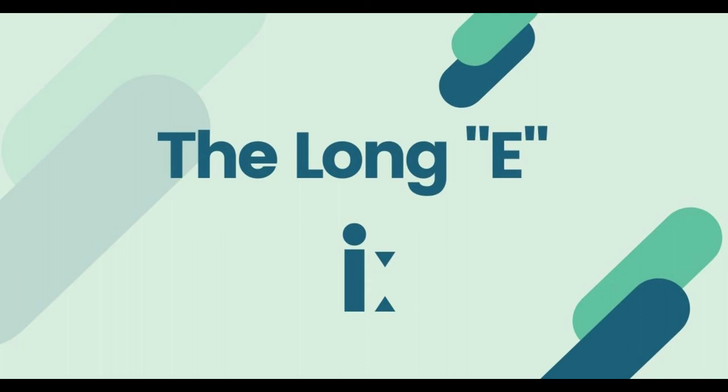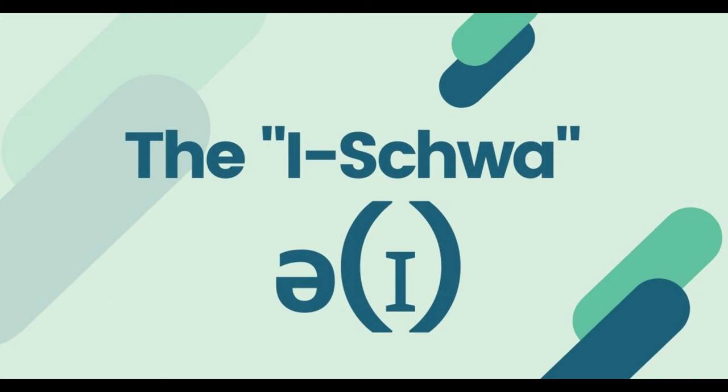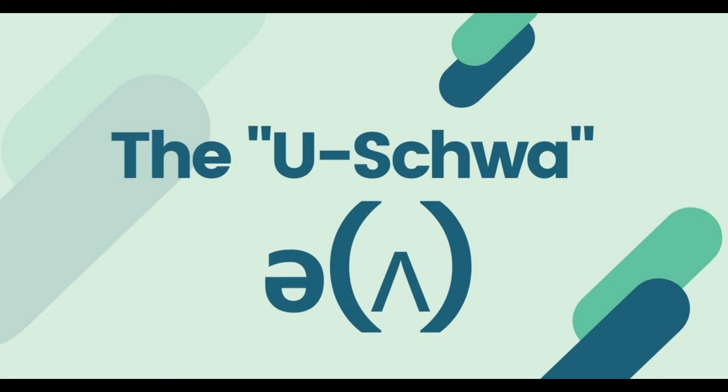The symbol of the schwa actually looks like this — an upside-down and backwards letter E, which is kind of strange because none of the schwa sounds actually sound like either of the accepted pronunciations of the letter E. It's not the 'eh' sound of the short E or the 'ee' sound of the long E. Since there is no distinction between the three different sounds of the schwa in the phonetic alphabet, the way I represent this on the Give Me Some English pronunciation portal is: for the true schwa, the symbol is the same; for the I-schwa, it is the schwa symbol combined with the symbol for the short letter I in parentheses; and for the U-schwa, it is the schwa symbol combined with the symbol for the short letter U in parentheses.